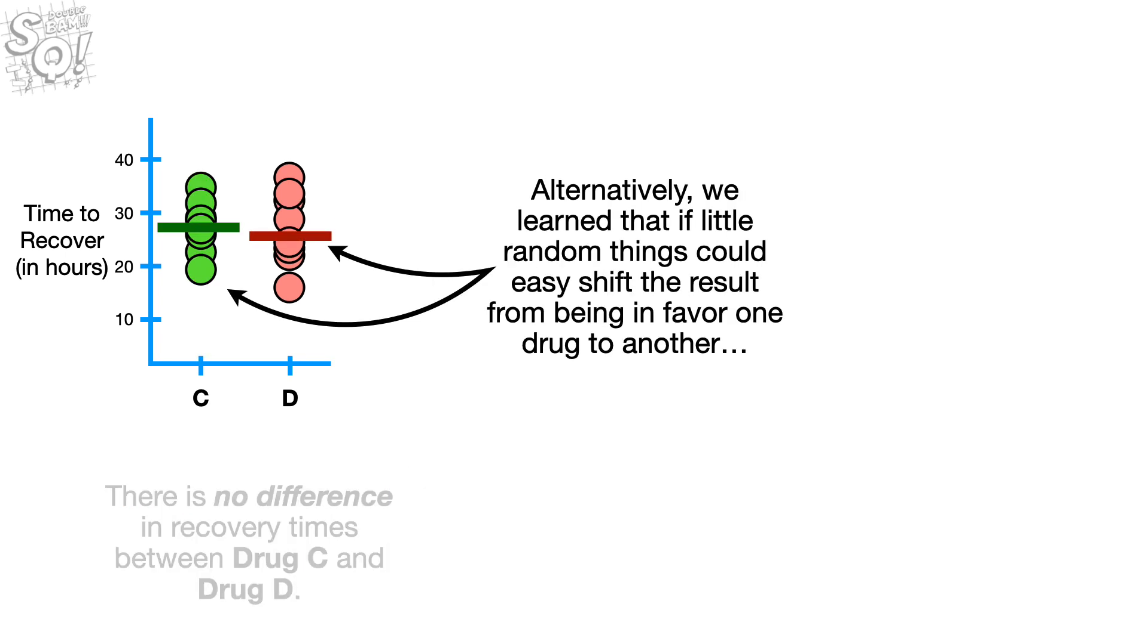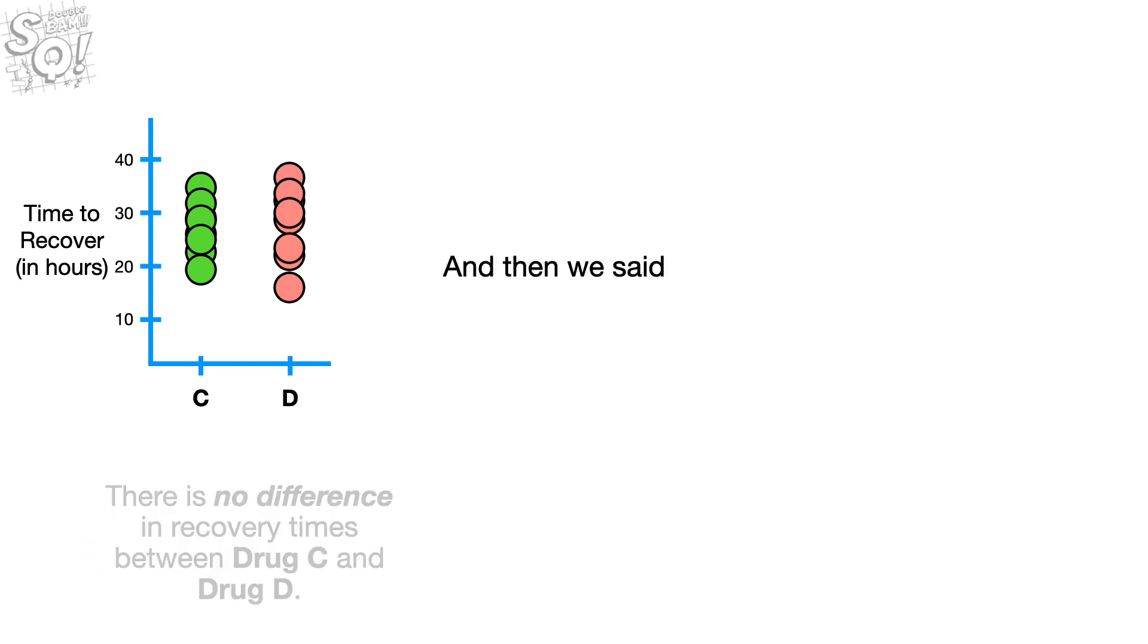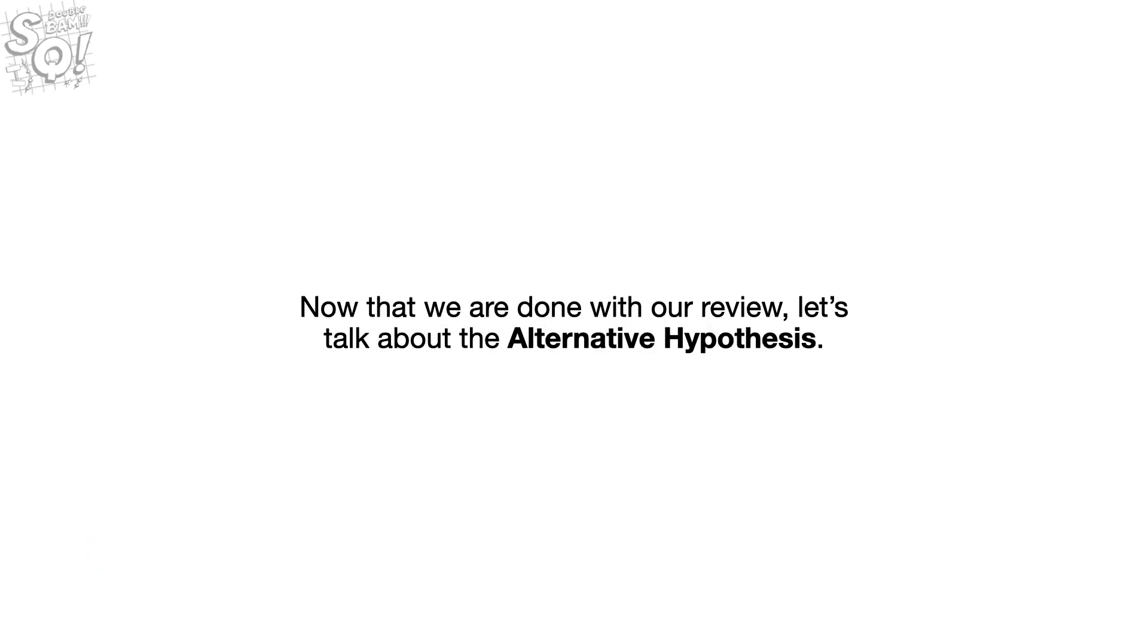Alternatively, we learned that if little random things could easily shift the result from being in favor of one drug to another, then we would fail to reject the Null Hypothesis. And then we said, triple bam! Now that we're done with our review, let's talk about the alternative hypothesis.